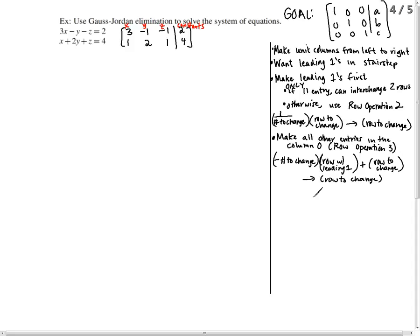I just wrote a brief summary of the steps of Gauss-Jordan elimination. There's lots of different ways to do it. This is a way that works every time. Make the unit columns from left to right. Remember that a unit column contains 1 and everything else 0s, all other entries.